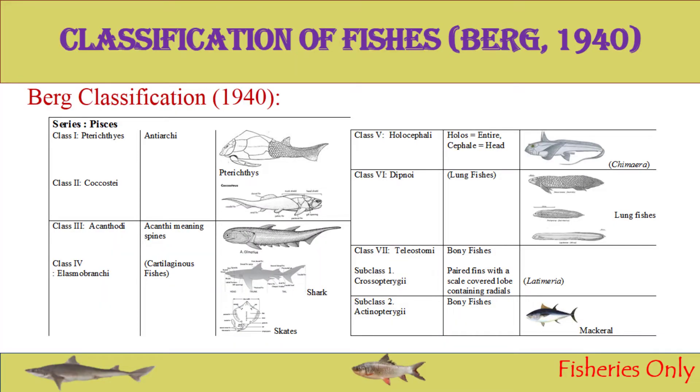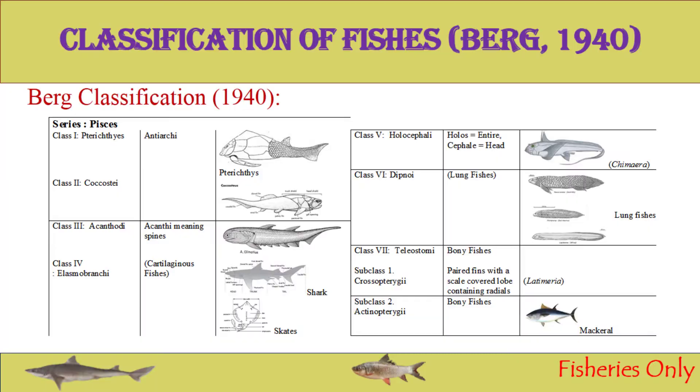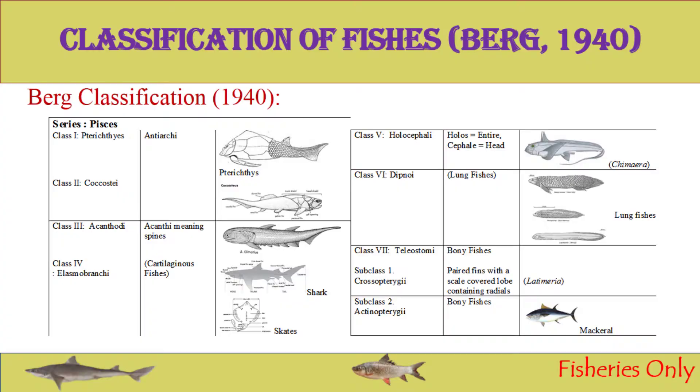The example of the first class, Pterichthys, is Pterichthys itself; this class is also called Antiarchii. The example of the second class, Coccosteus, is Coccosteus. Acanthodii means spines — 'acantha' means spines — and examples include Climatius. The fourth class, Elasmobranchii, whose endoskeleton is made of cartilage, includes sharks, skates, and rays. The fifth class, Holocephali, meaning 'entire head' with fully developed upper and lower jaws, has the example of Chimaera fish.